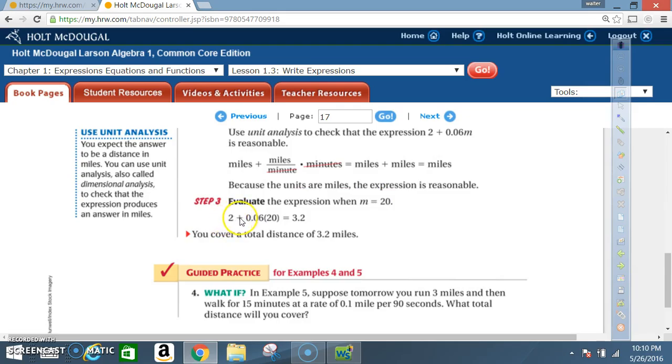So, you got 2 plus 0.06 times 20. And when you multiply that out, it's going to come out to be 3.2. So, you covered a total distance of 3.2 miles. You covered a total distance of 3.2 miles.